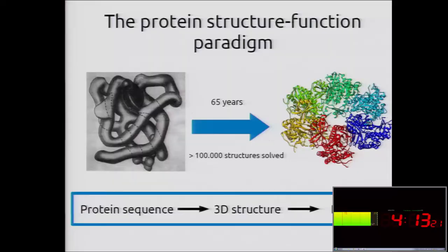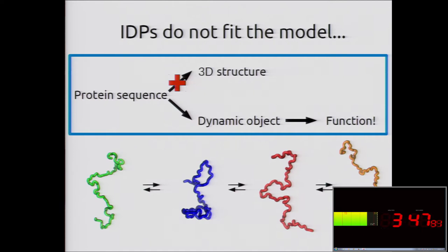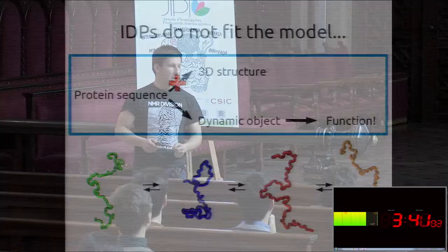Very early in this field it was proposed what we call the structure-function paradigm: we have a sequence of amino acids which spontaneously folds into a stable three-dimensional structure, and that structure has the right physical-chemical properties to execute a definite function. This model worked very well, but there were some proteins that had special behaviors and did not fit this model, because no structure could be obtained from them.